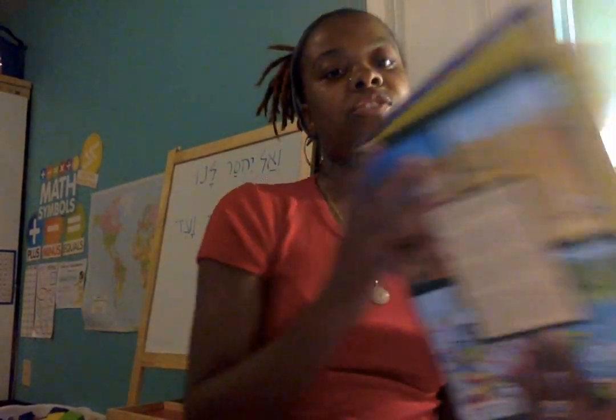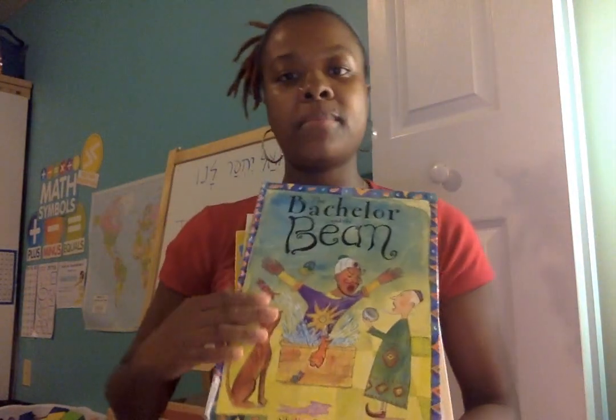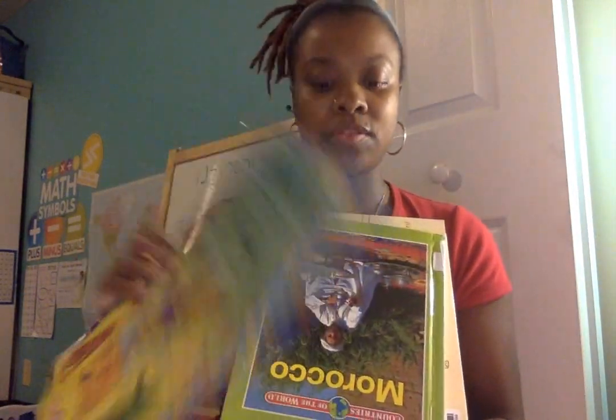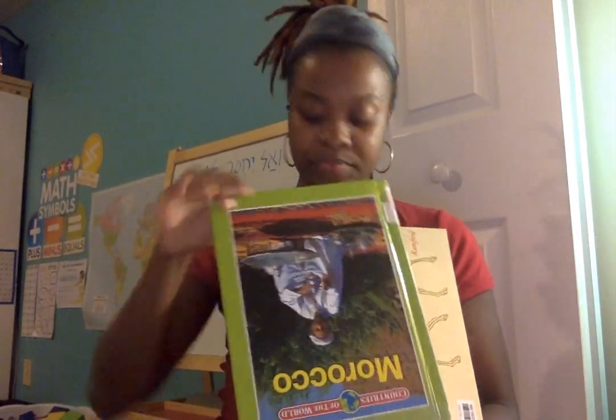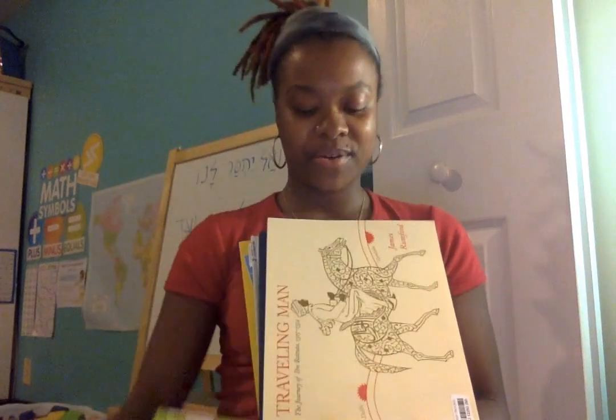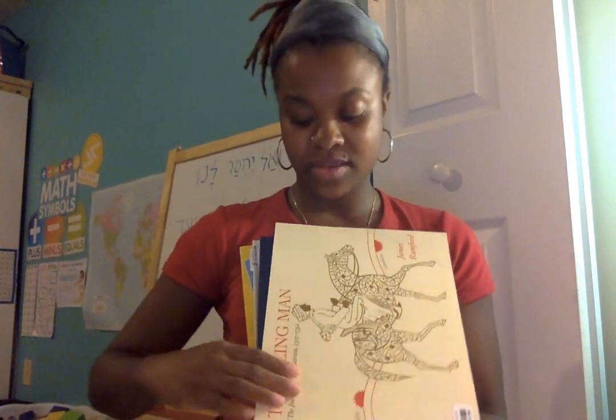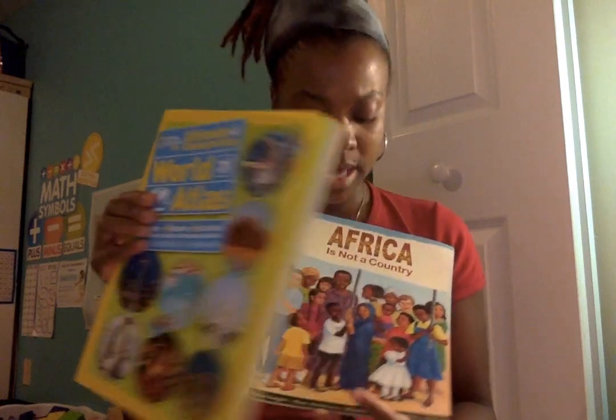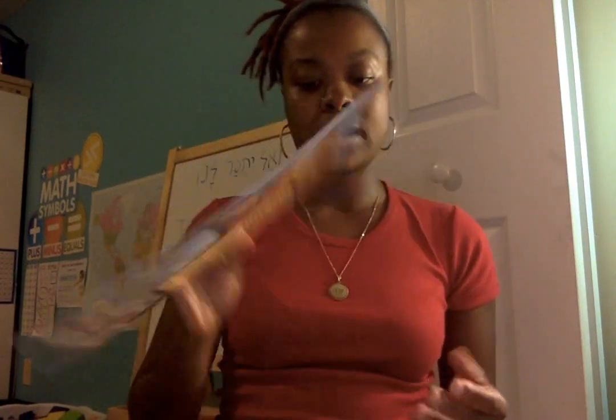We also used a lot of different books — here's just a sample of them; links to everything are on the blog post. Traveling Man, Calabash Cat — they really liked that one. My Father's Shop — they loved this one. This World Atlas is great; we're using it for every country we do. And Africa is Not a Country is another really good book.